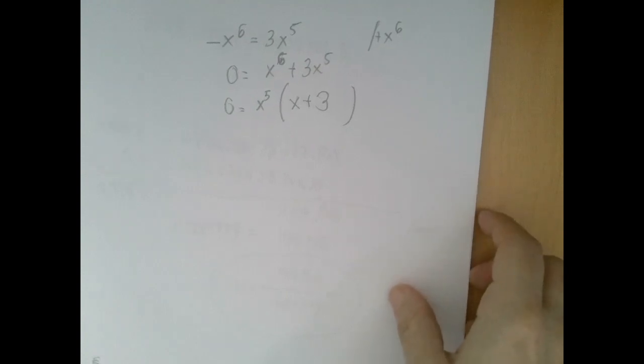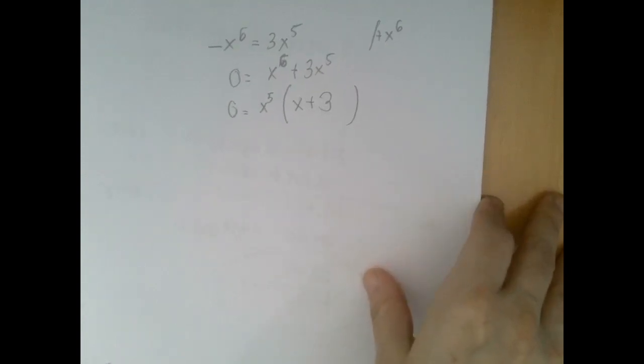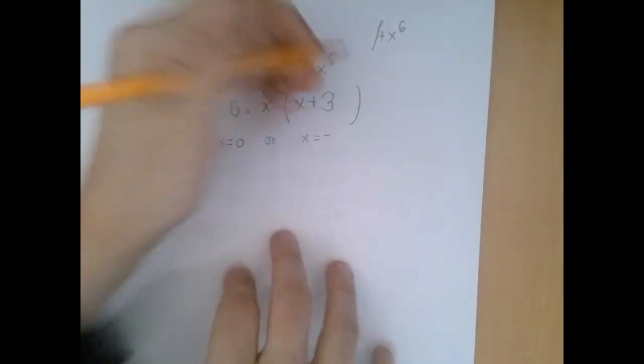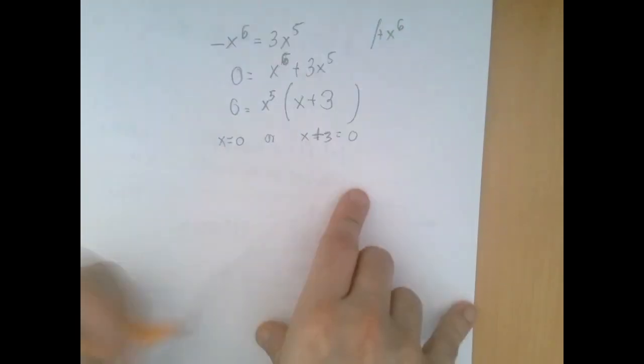So when we apply the zero product rule to the six factors, the first five will always say the same thing. X equals to zero, or x plus three equals to zero when x is negative three.